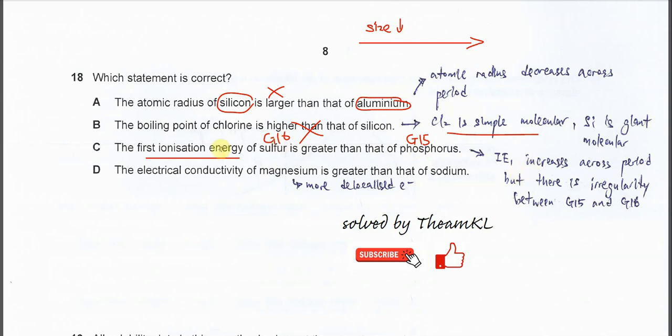And this is the irregularities. Therefore, this statement is also wrong. Group 15 should have a slightly higher first IE compared to group 16. This is, again, the irregularities between 15 and 16.